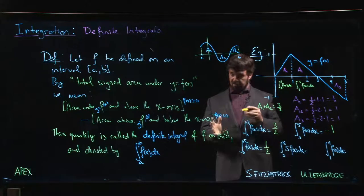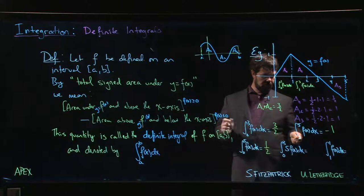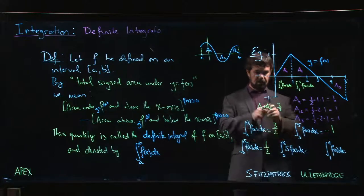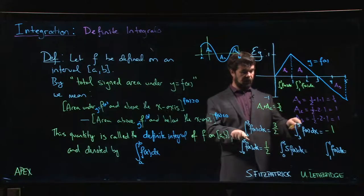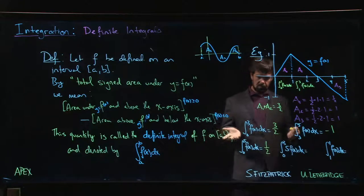So we'll find that this is kind of a general property that if one integral begins where another one ended, if you add the two together, you're going to get the total going from the beginning of the first to the end of the second. Seems reasonable enough.